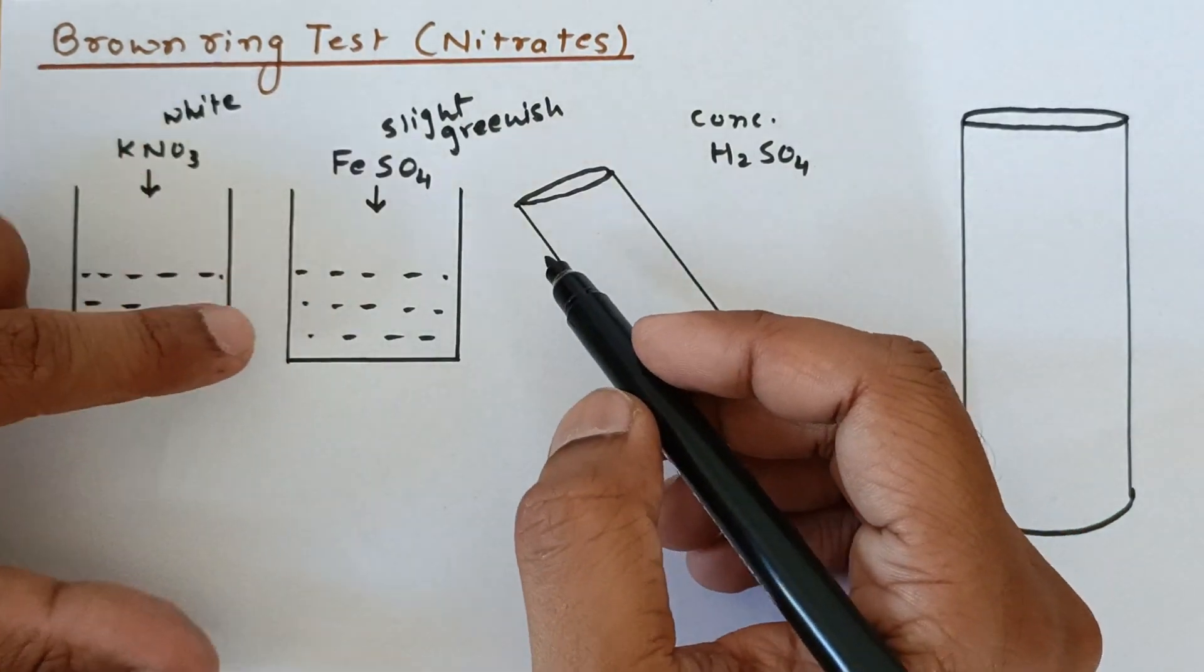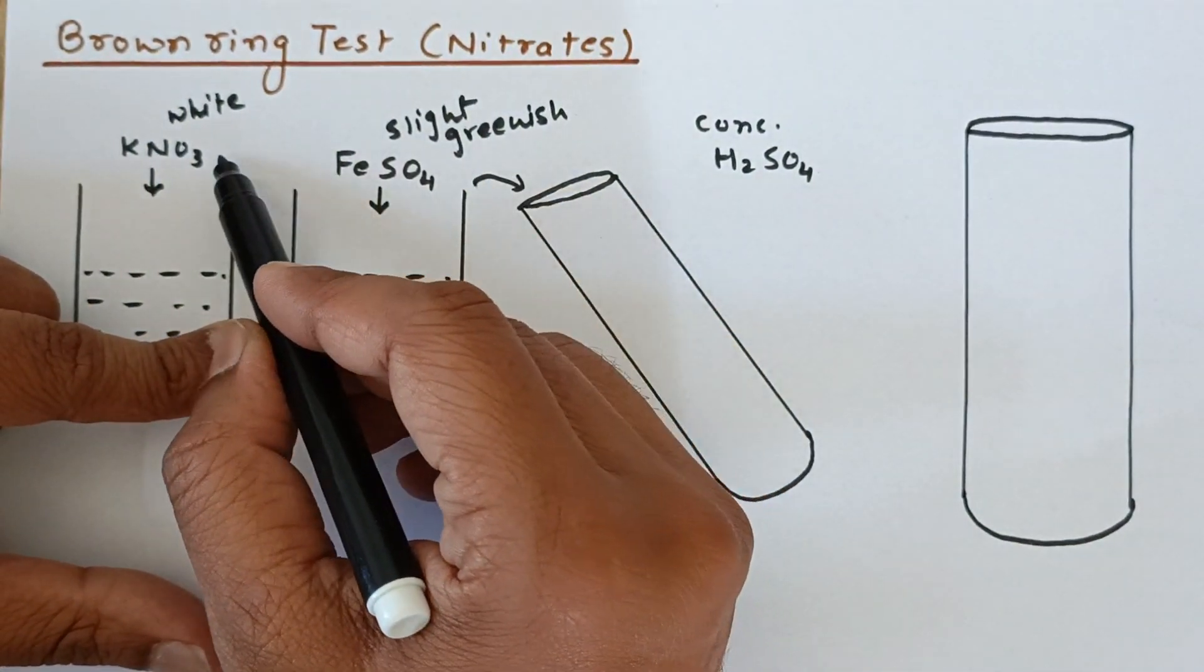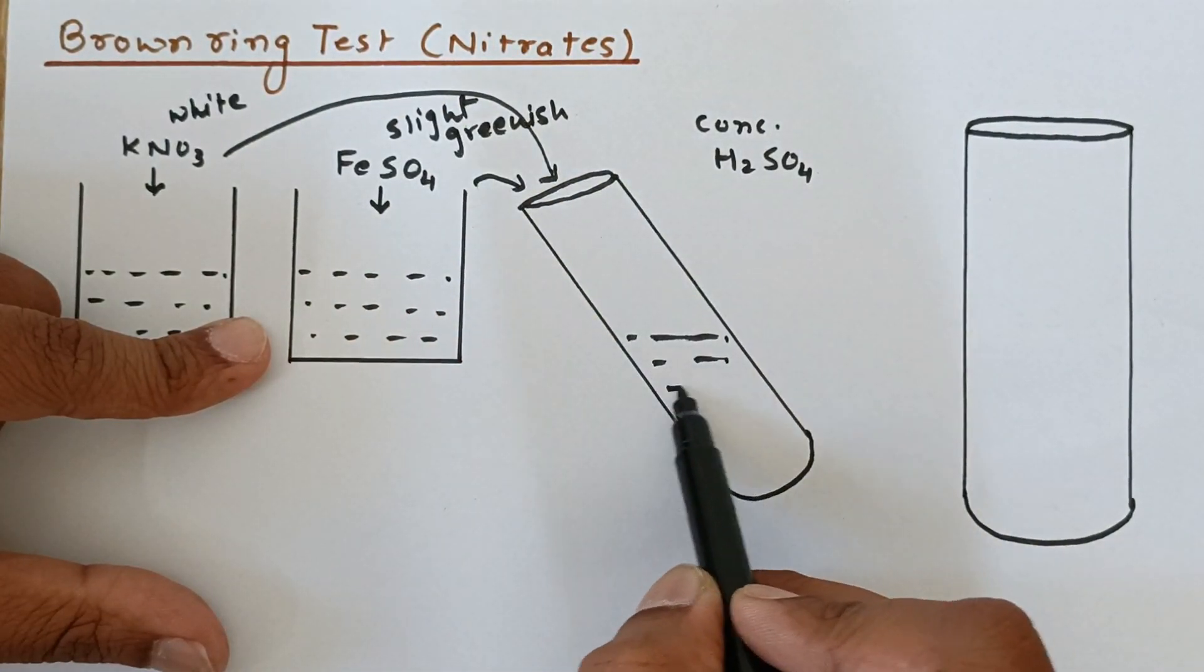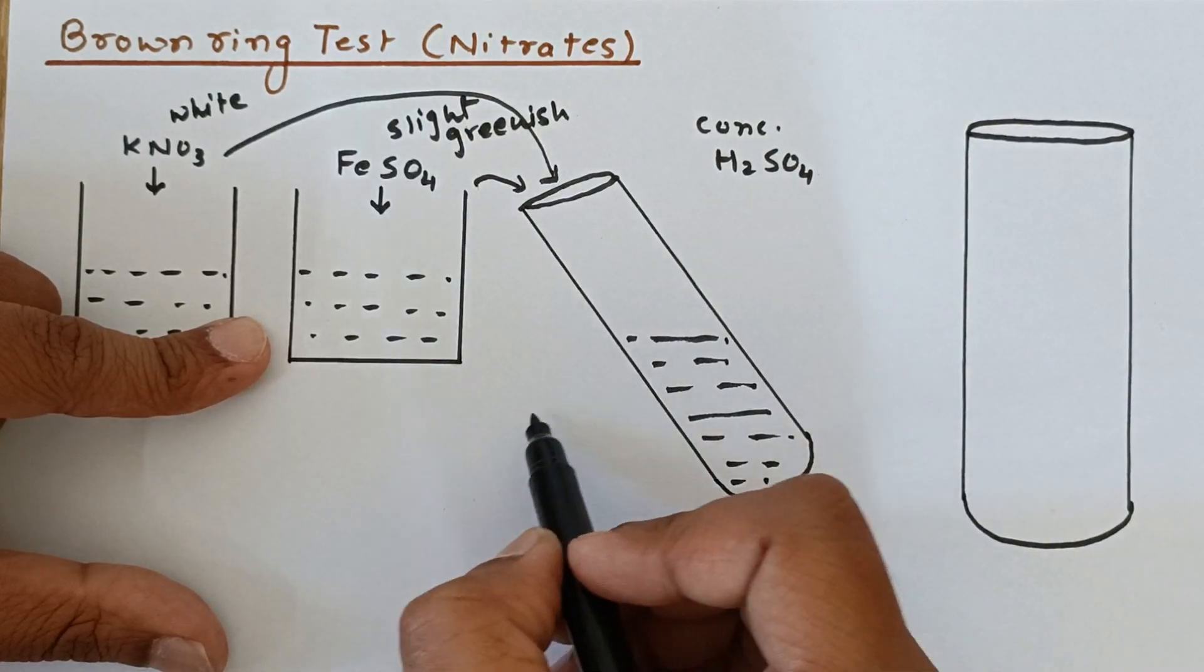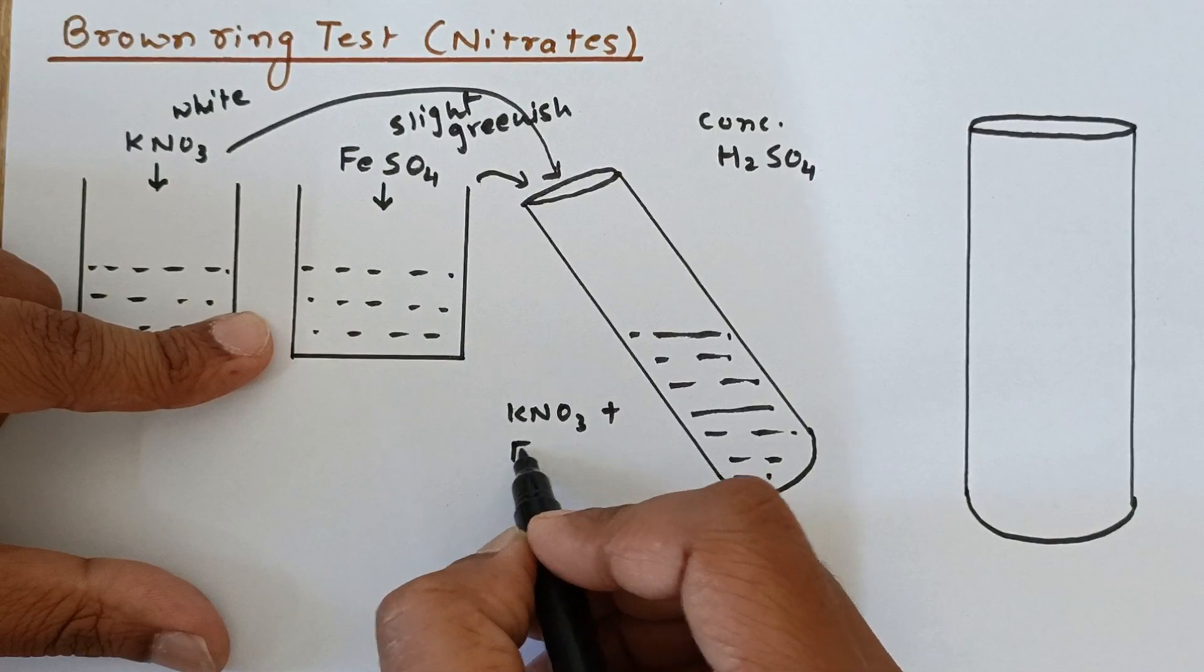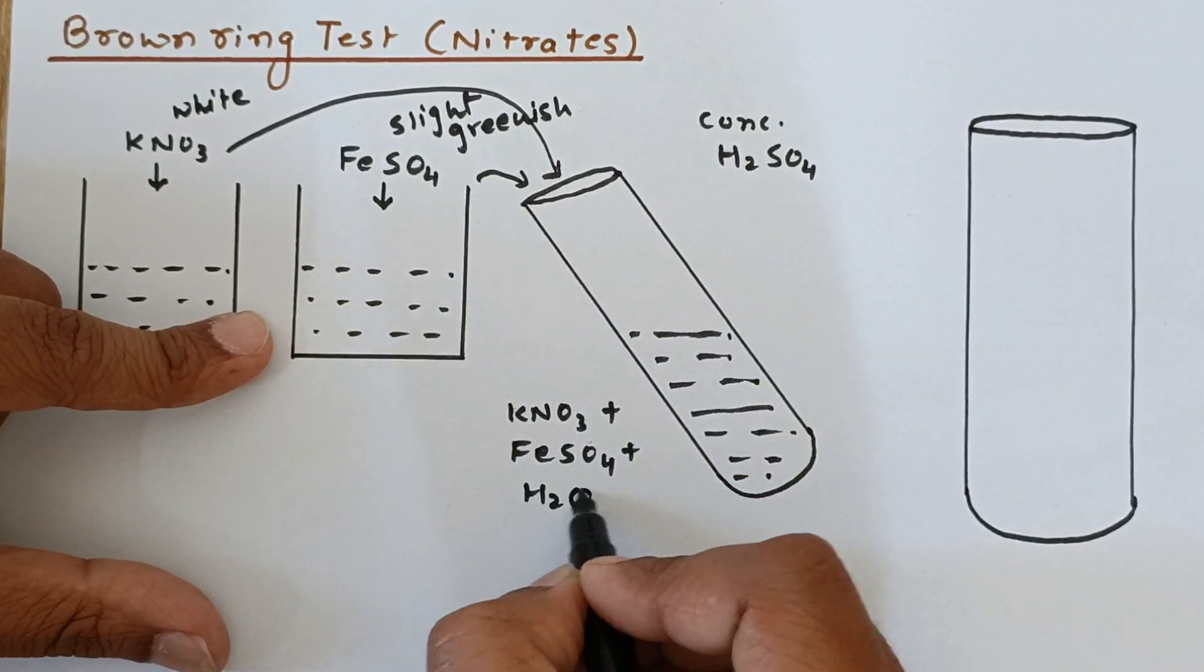Now what we are going to do is we are going to add these two solutions in this test tube like this. Now we have a mixture of KNO3 and FeSO4 plus we have water as a medium.